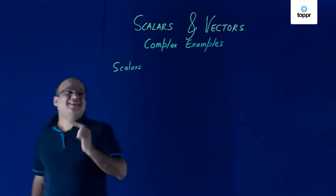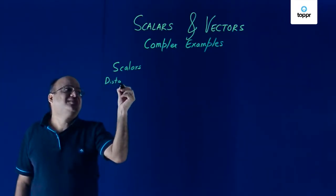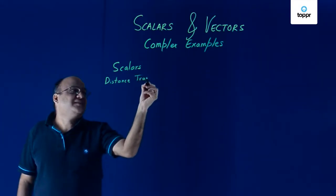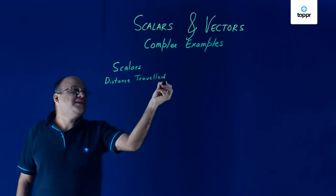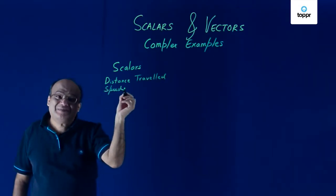Scalars, first example is distance travelled. Distance travelled is a scalar. Speed is distance travelled per unit time, is a scalar.